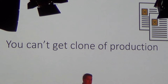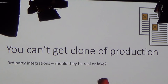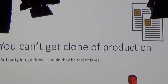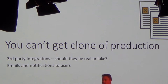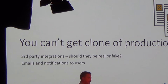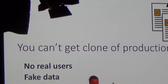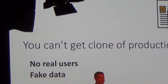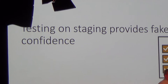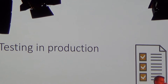You can't really get a clone of production. You can't get third-party integrations — if you are testing those integrations in staging, how do you do it, especially if you pay for them or if it has something to do with money? Emails or notifications to users — how do you differentiate them? If you differentiate them with prefixes or configuration, you're getting further away from production. In a nutshell, what is different is that you have no real users and you have fake data. So testing on staging provides really fake confidence — even if you don't find bugs on staging, it doesn't mean you won't find them in production. What is really happening is that you're testing in production anyway.